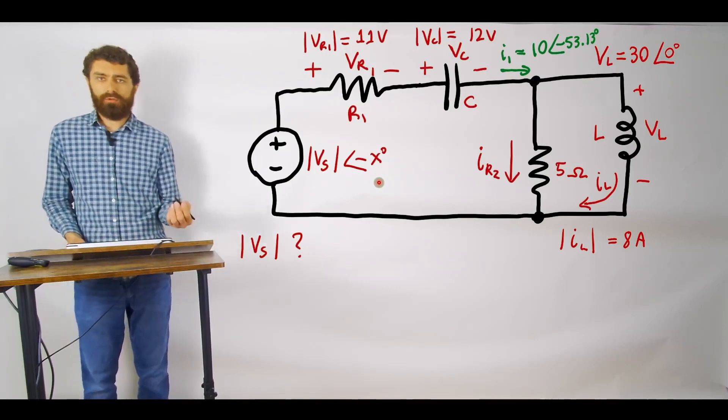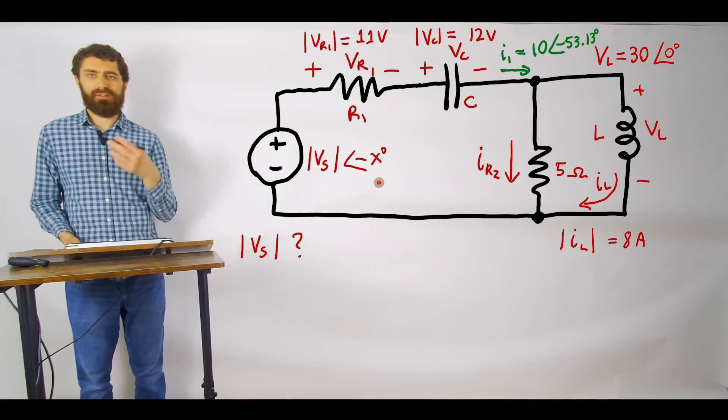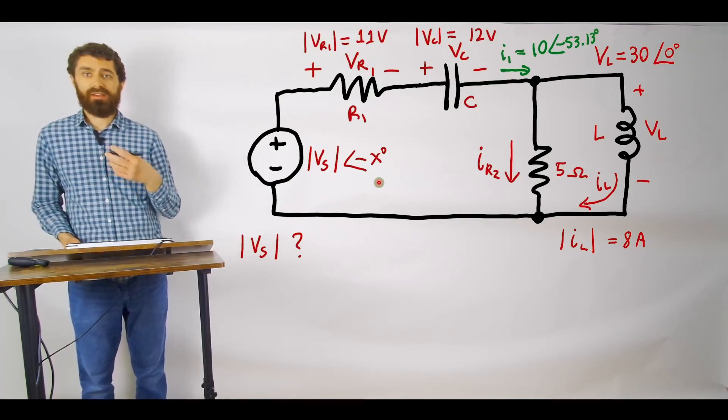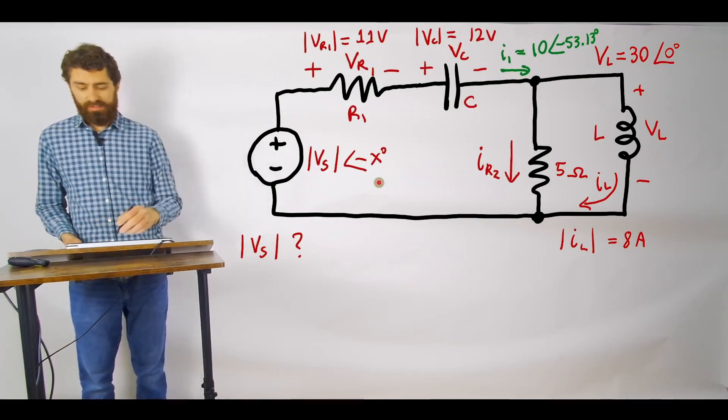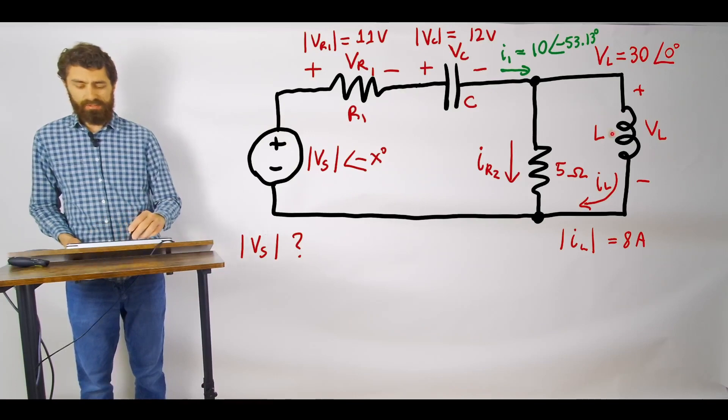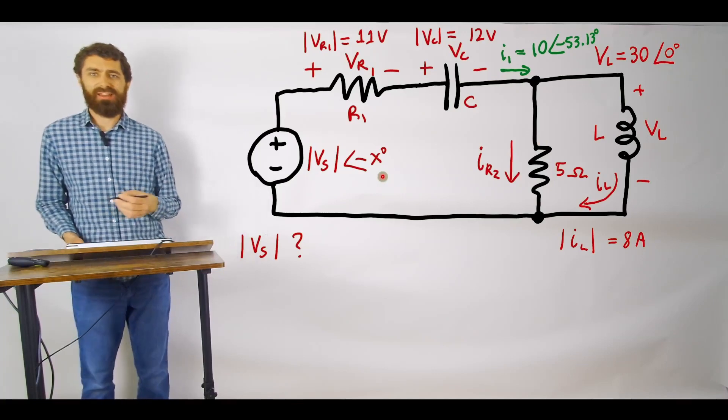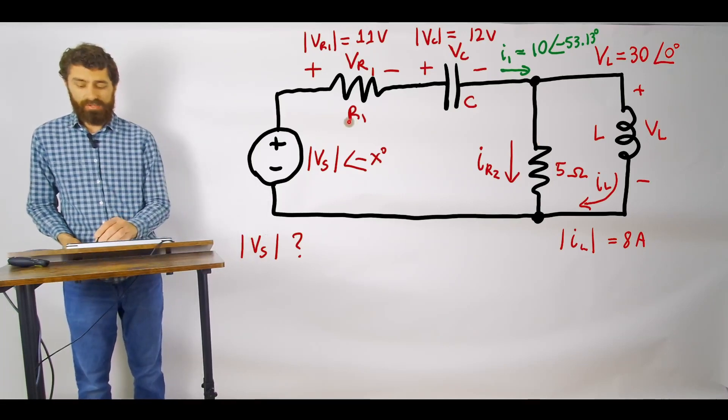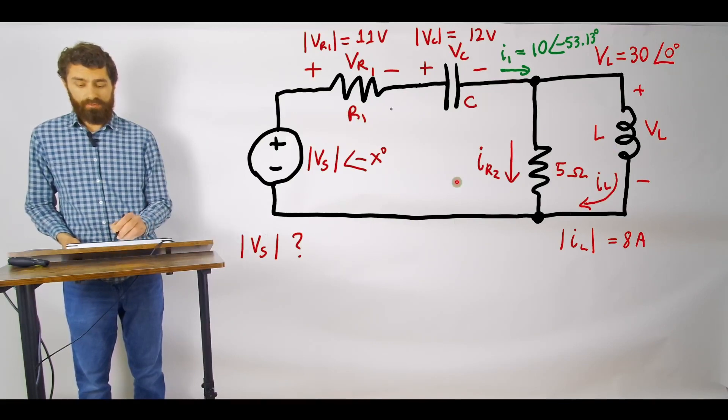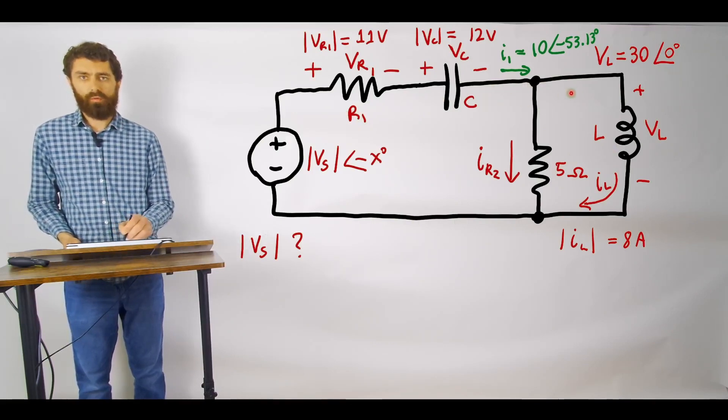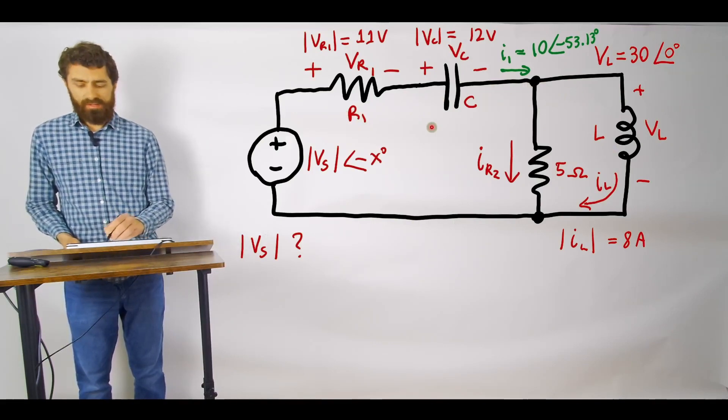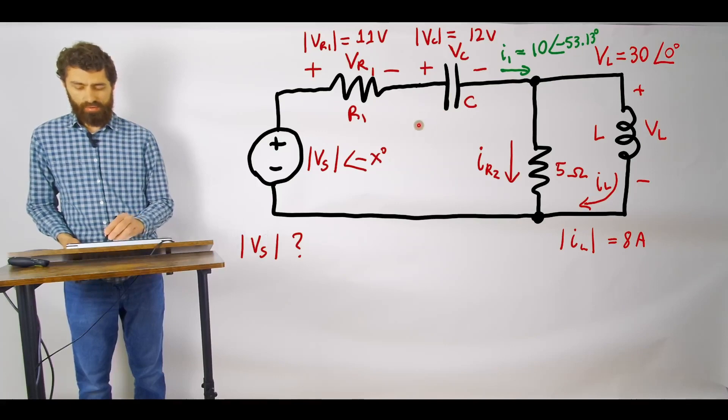So if we're wanting to find a voltage makes sense that we might want to think about using KVL right and so like we could think oh well maybe I can do a KVL loop around here and you are right you can you can definitely do that we just need to know what these voltages are around the loop. Well if you think about it we know what I1 is right?